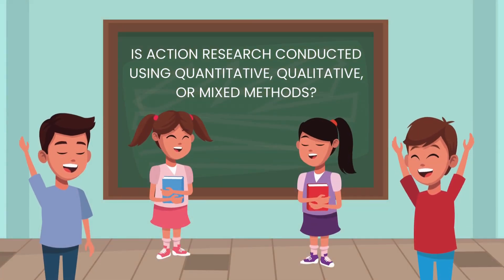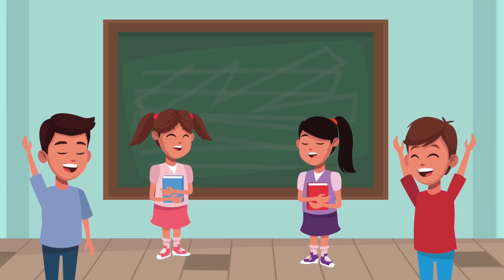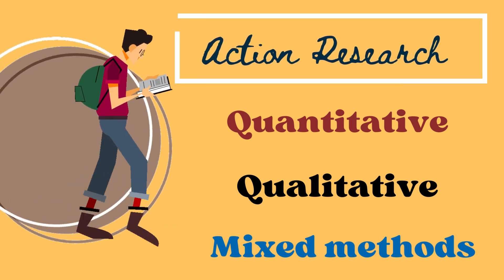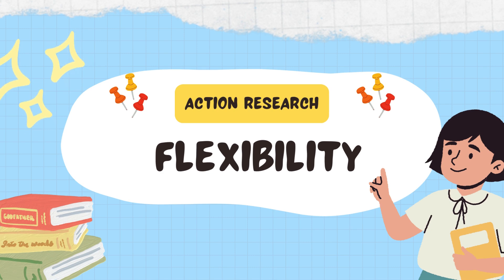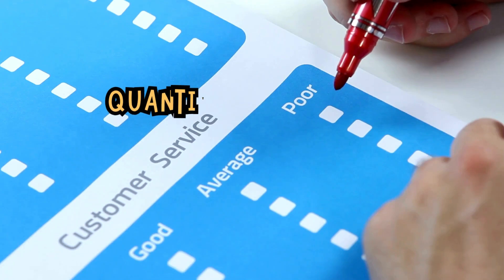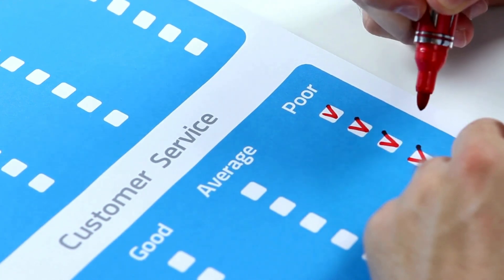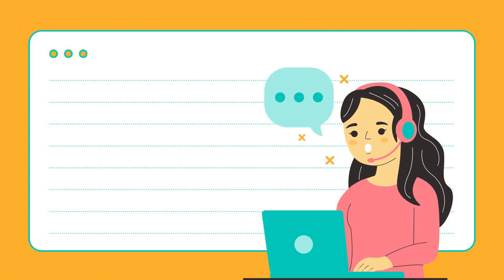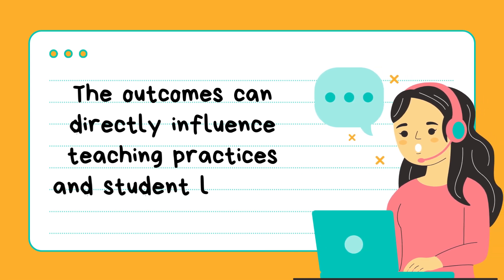There is always a question regarding the research methods used in action research: is it conducted using quantitative, qualitative, or mixed methods? Data collection in each phase can be quantitative, qualitative, or a mix of both, depending on what you want to learn. Action research is known for its flexibility because it can incorporate different research methodologies depending on the nature of the problem and the goals of the research. This adaptability allows educators to use quantitative methods like surveys, tests, or statistical analysis, and qualitative methods such as interviews, observations, or focus groups, or a combination of both — making action research particularly useful in educational settings where outcomes can directly influence teaching practices and student learning.